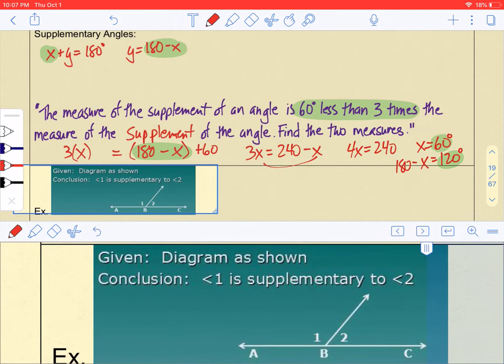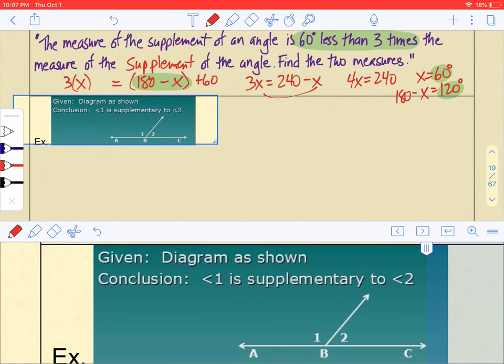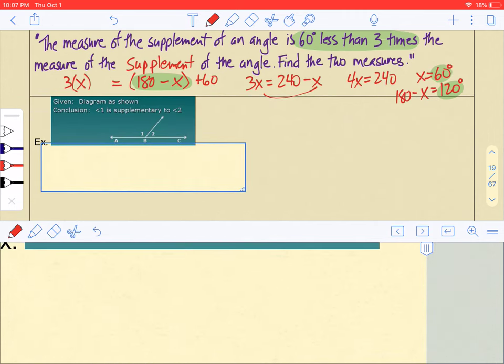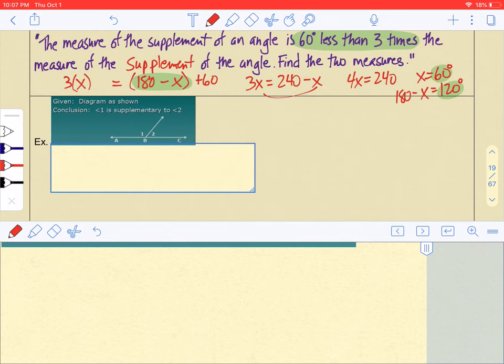Proof: diagram is shown, conclude angle one is congruent to angle two. So here we go, line one: diagram.